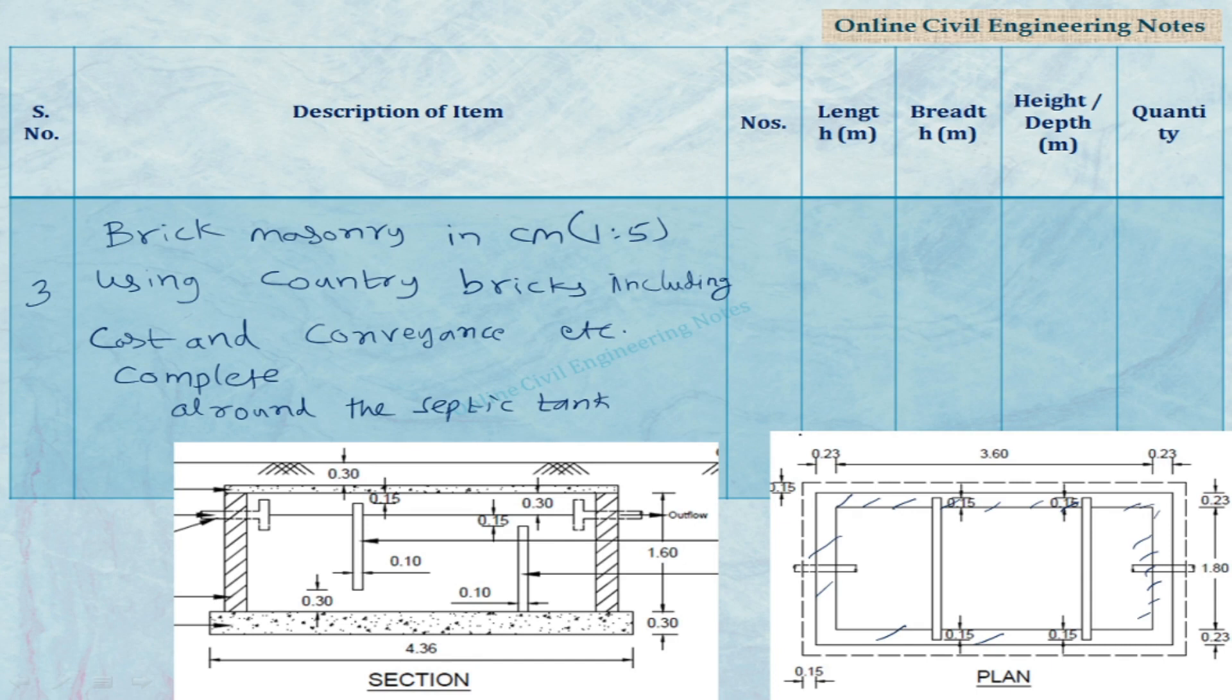Now find out the length of the septic tank here. This is the inner length of the septic tank that is 3.6 meters. The wall is laid with brick masonry. Wall thickness is 0.23 meters. Take the center to center length in the longer direction. 3.6 plus 2 into 0.23 by 2 which is equal to 3.83.